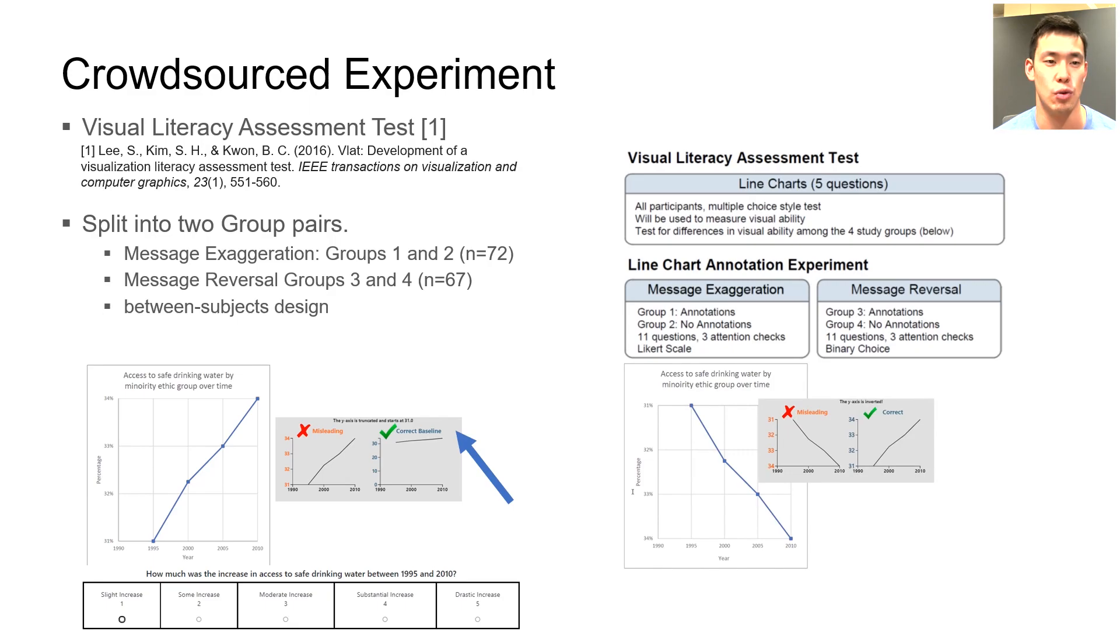Similarly, for the message reversal test, group 3 had access to the annotation, while group 4 did not. The question was binary choice with a not sure option.